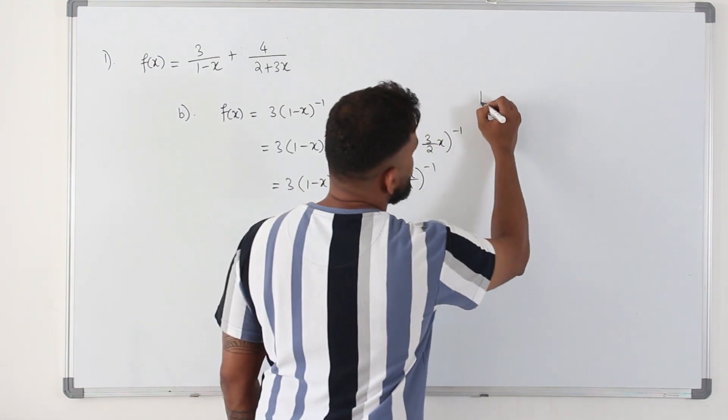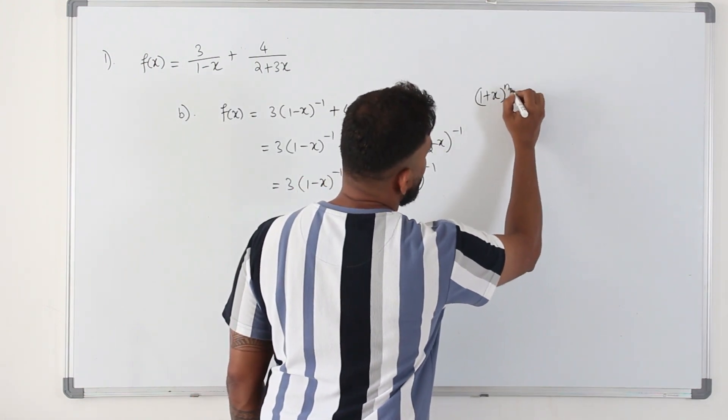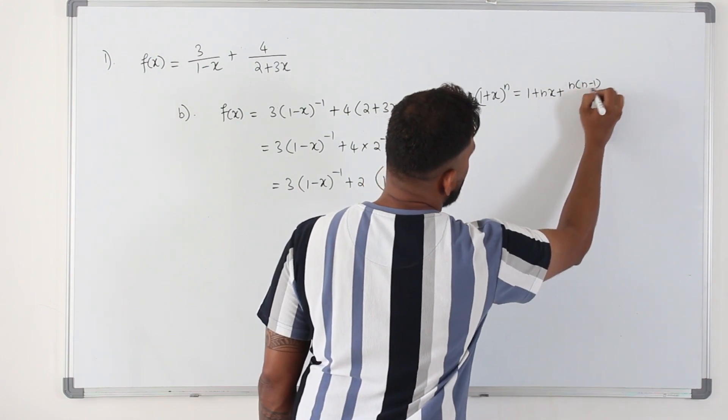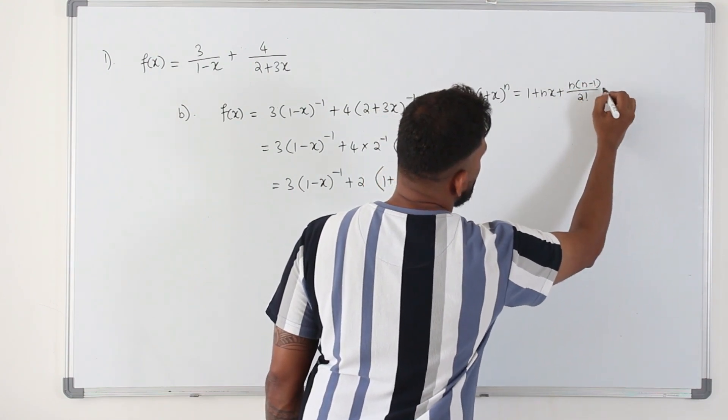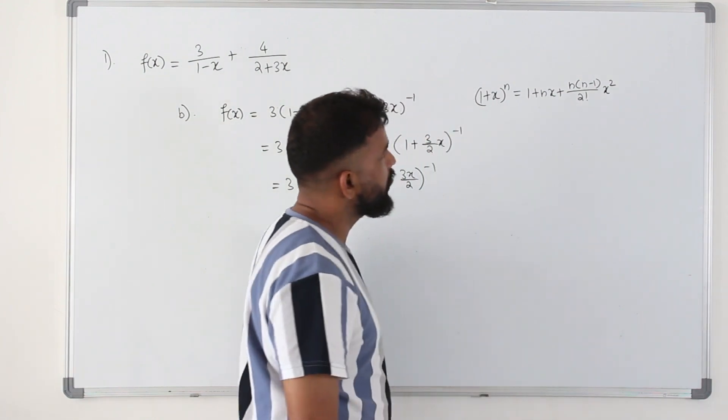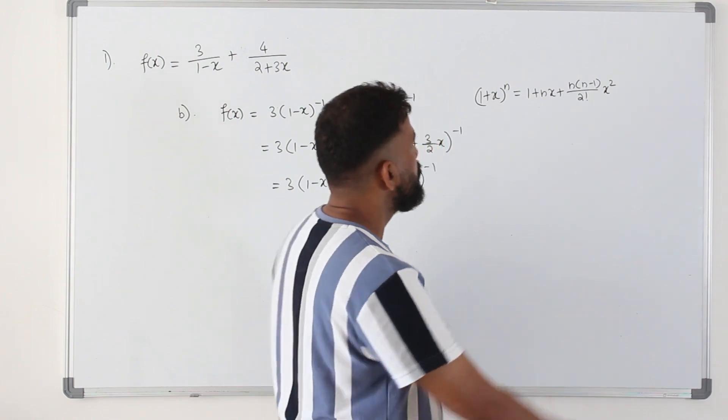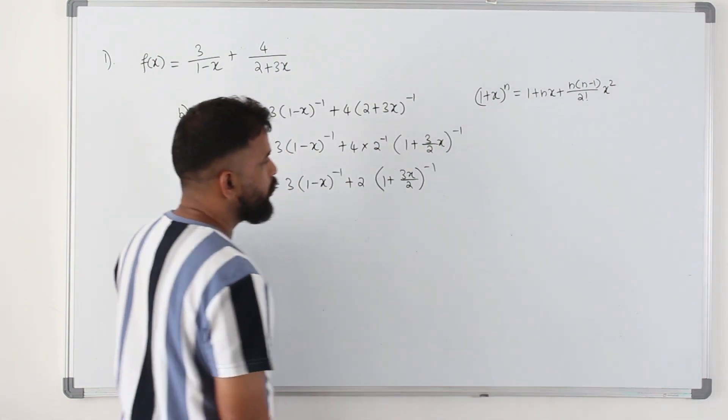So the binomial expansion is this. If you have 1 plus x to the power n, it's 1 plus nx plus n times n minus 1 over 2 factorial x square, and n times n minus 1 times n minus 2 by 3 factorial x cube. But we want the expansion until x square only.